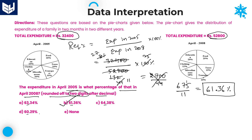That is option B. In case 'none of these' was not there, you could stop at the integer part itself — since no other option starts with 61, obviously the answer is 61.36 percentage only, with no need to calculate further decimal digits. But here 'none of these' is there, so you definitely need to calculate the remaining digits. 61.36 is the right answer, which is option B.